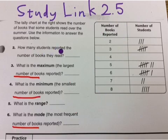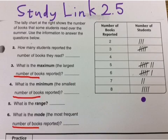First of all, how many students reported the number of books they read? Well, this is the number of students, so you have 3 plus 5 is 8, and then you need to add the rest of them — and that's how many students there are.